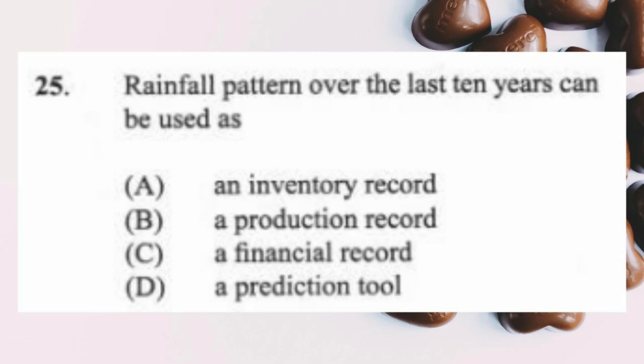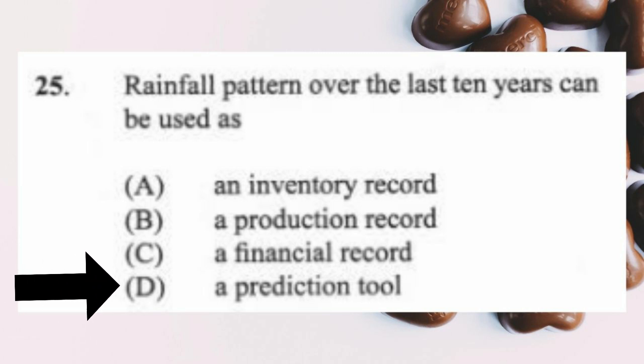Question 25: Rainfall patterns over the last 10 years can be used as (a) an inventory record, (b) a production record, (c) a financial record, (d) a prediction tool. The answer is D, a prediction tool. An inventory lists all that the farm owns. A production record tracks things like seeds started and plants at end of production. A financial record gives costs and income from sales. Rainfall data over time is best used as a prediction tool.